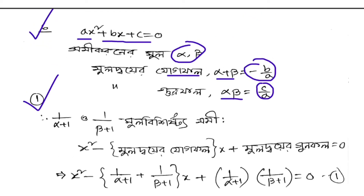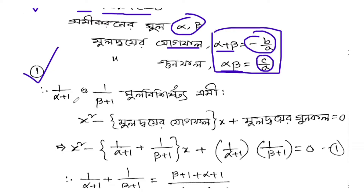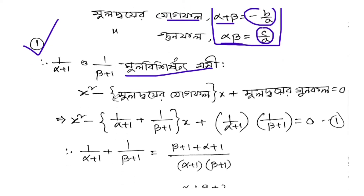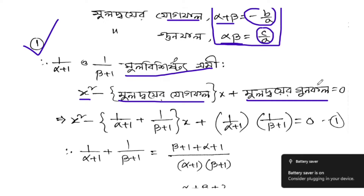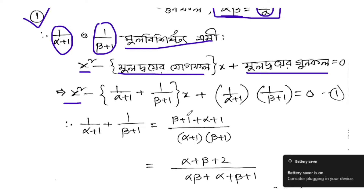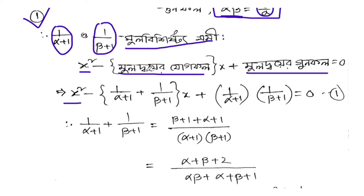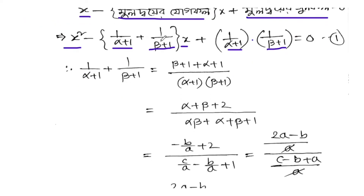The equation I want to find: 1 by alpha plus 1, and 1 by beta plus 1 — find the equation whose roots are these. I'll find the sum: one by alpha plus one, plus one by beta plus one. Then find the product: one by alpha plus one, multiplied by one by beta plus one. For the equation, we need x squared minus (sum)x plus (product) equal to zero.